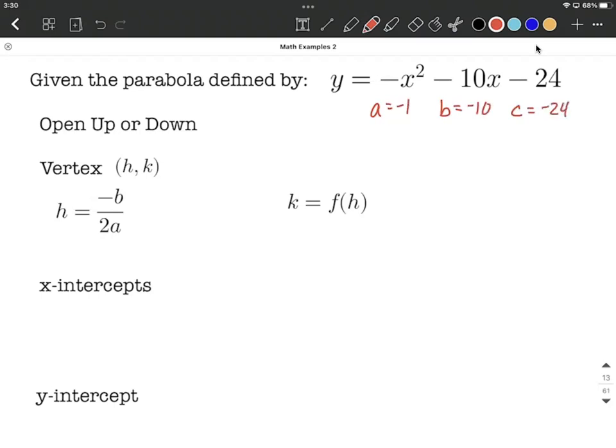and c is going to be negative 24. To determine whether it opens up or down, we focus on a. Because a is negative, that means this parabola opens down. If a had been positive, it would open up.